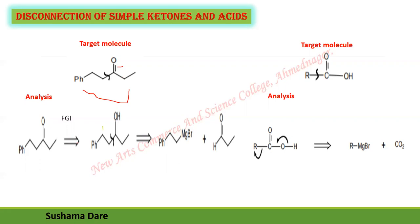Whenever a carbonyl group is present, there are four options: we can disconnect a bond at the alpha carbon in the direction of the alpha carbon, or disconnect a bond in the direction of the other carbon. The positive charge must always be on the carbonyl carbon. These are the four possible disconnection options.